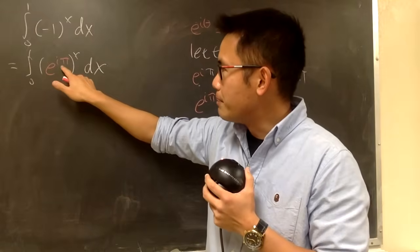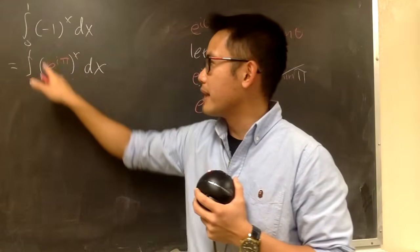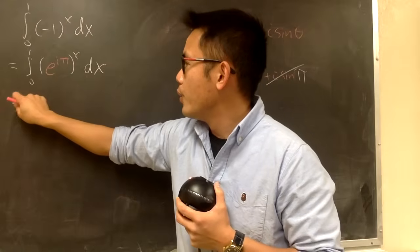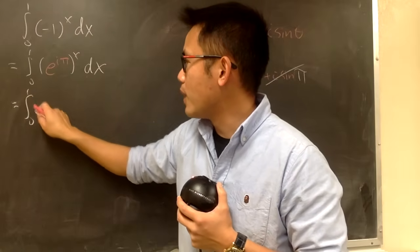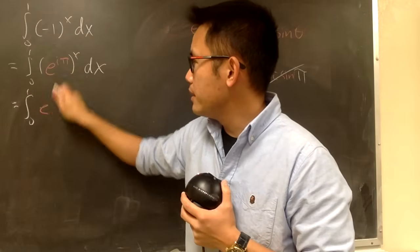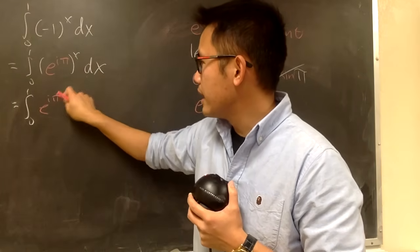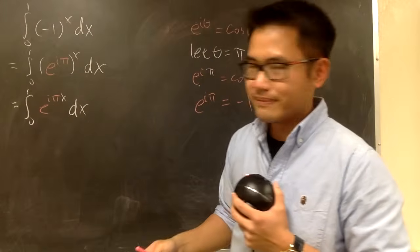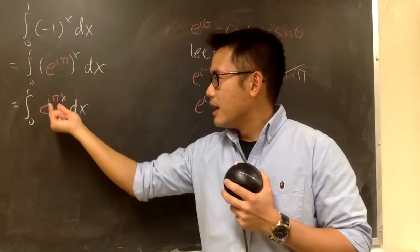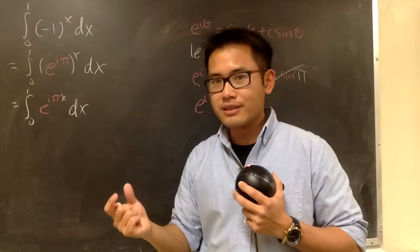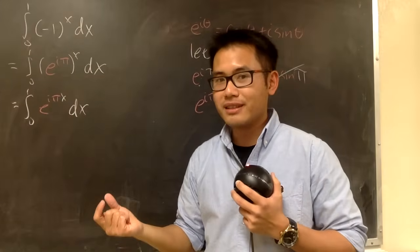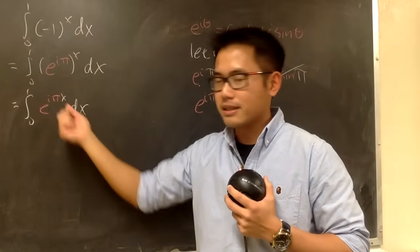And then, when we have a power to a power, we just multiply the powers, and we get the integral from 0 to 1, e still for the base, and then we have i pi times x, and then we have the dx right here. And now, i and pi, they're just constant, and when you multiply them, it's still constant.